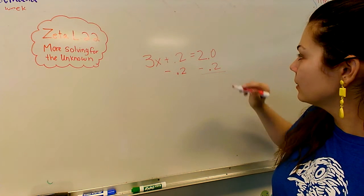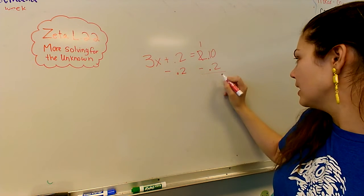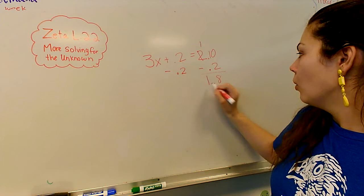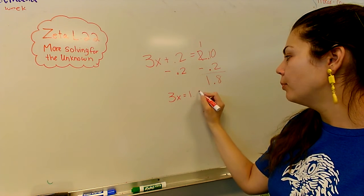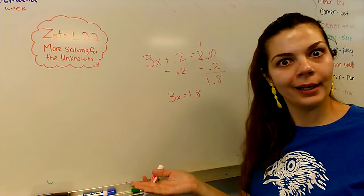All right, so now I can subtract. Borrow one, he becomes a 10. 1.8. So now I have 3x equals 1.8. Now what am I going to do?